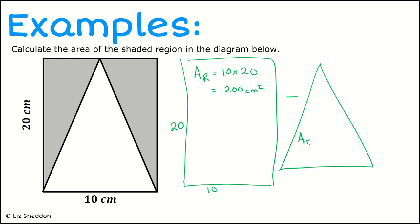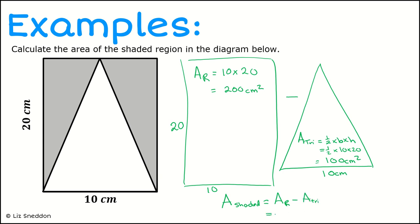Now finding the area of the triangle: the formula is half times the base times the height. The base of the triangle is 10 centimetres and the height is 20 centimetres, so half times 10 times 20 gives 100 centimetres squared. The area of the shaded part equals the area of the rectangle minus the area of the triangle: 200 centimetres squared minus 100 centimetres squared gives an area of 100 centimetres squared. That's how big the shaded region is.